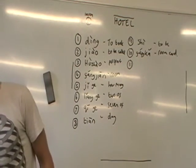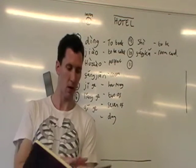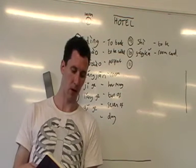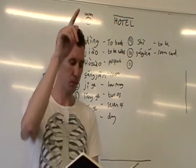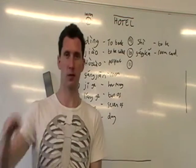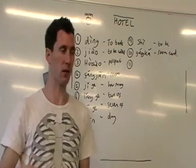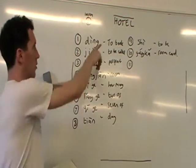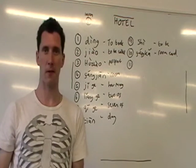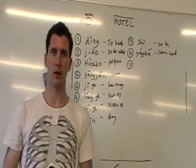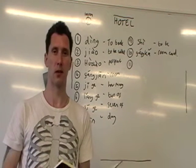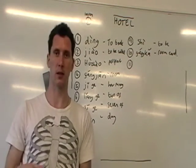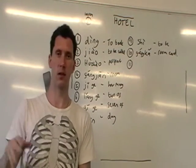That concludes the word list. We'll go through a few phrases now. First phrase: 'I booked' — wǒ dìng le. I is wǒ, dìng is to book, and le, as we remember from previous lessons, means that you've taken an action in the past — there's no tone on it. So wǒ dìng le — I booked.